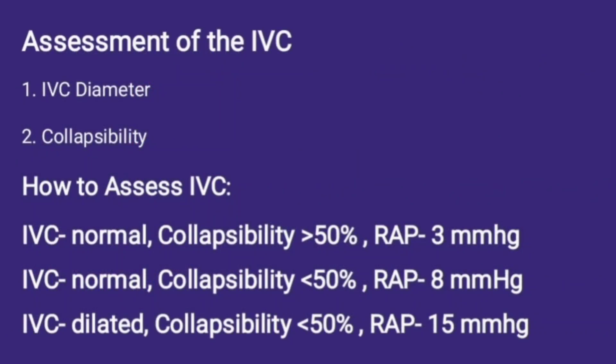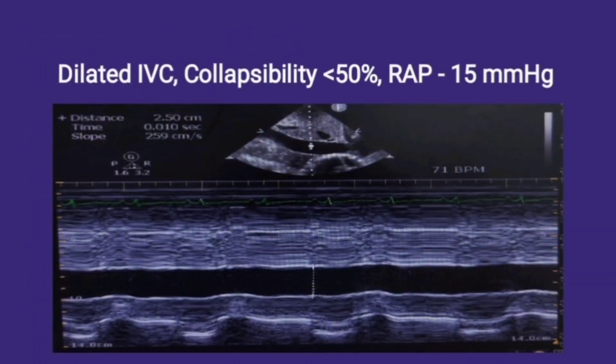The final parameter for assessing pulmonary hypertension includes evaluation of the inferior vena cava. We assess the IVC diameter and its collapsibility with respiration. An IVC diameter of more than 20 mm is considered dilated, with collapsibility of less than 50% and a RAP of 15 mmHg, which ultimately suggests increased PA pressures.